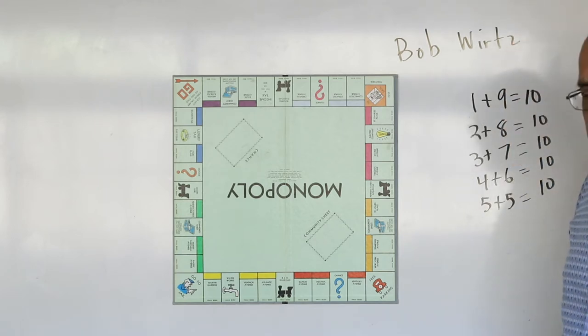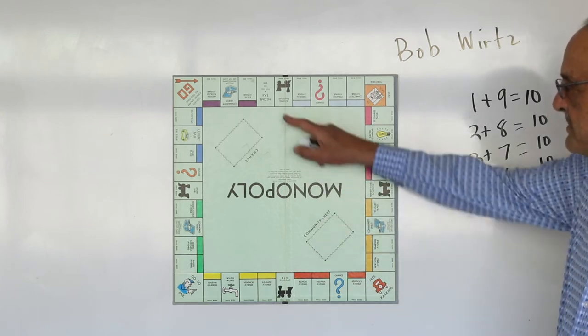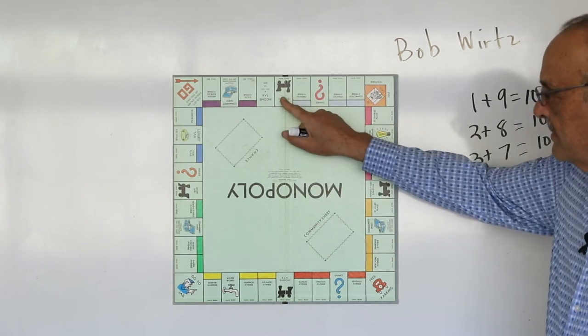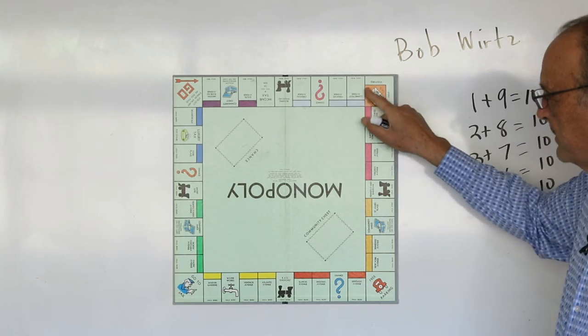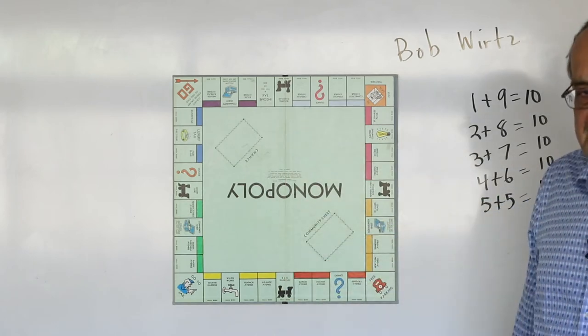And there was only one kid on the block who couldn't move his piece without counting each individual square. But if I was here and I rolled a 7, I immediately put it here. But this other fellow on the block had to go 1, 2, 3, 4, 5, 6, 7. Well, this turns out to be a valuable teaching aid for teaching basic adding facts.